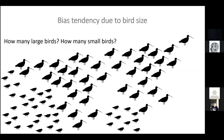To think about some of those biases, here are a couple of examples to practice. How many large birds do you think are in this flock? And how many small birds? The larger ones are curlew-shaped and the smaller ones are sanderling-shaped. There are actually the same number of both large and small birds. The larger birds tend to take up more space, so it feels like there are more of them — but that's an important thing to keep in mind when you're in the field.